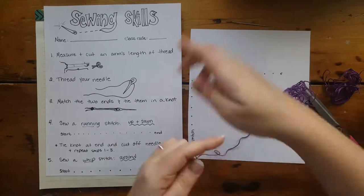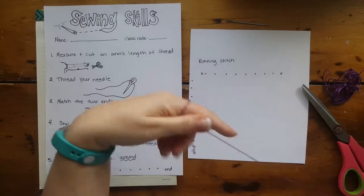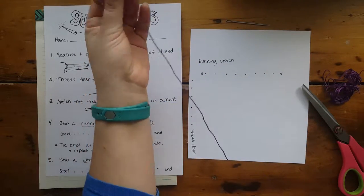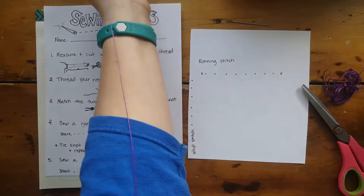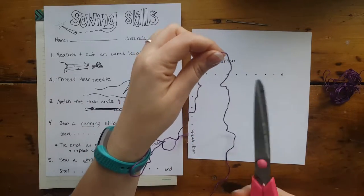The first step is to measure and cut an arm's length of thread. Measuring an arm's length means you're holding it in one hand, stretching it out to your armpit, and that's about how long we need to work with today. We'll cut it there.